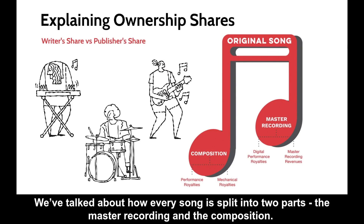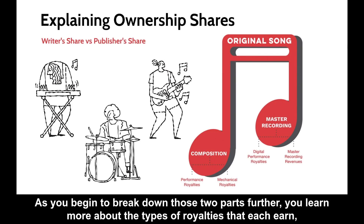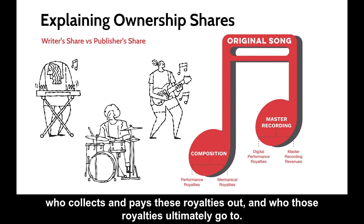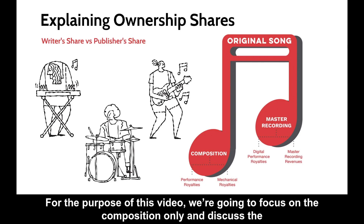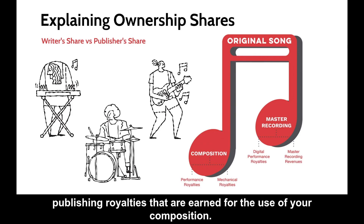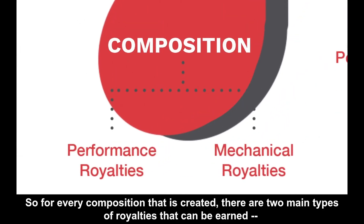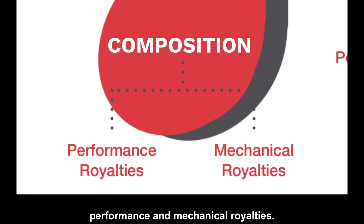We've talked about how every song is split into two parts: the master recording and the composition. As you begin to break down those two parts further, you learn more about the types of royalties that each earn, who collects and pays these royalties out, and who those royalties ultimately go to. For the purpose of this video, we're going to focus on the composition only and discuss the publishing royalties that are earned for the use of your composition. For every composition that is created, there are two main types of royalties that can be earned: performance and mechanical royalties.